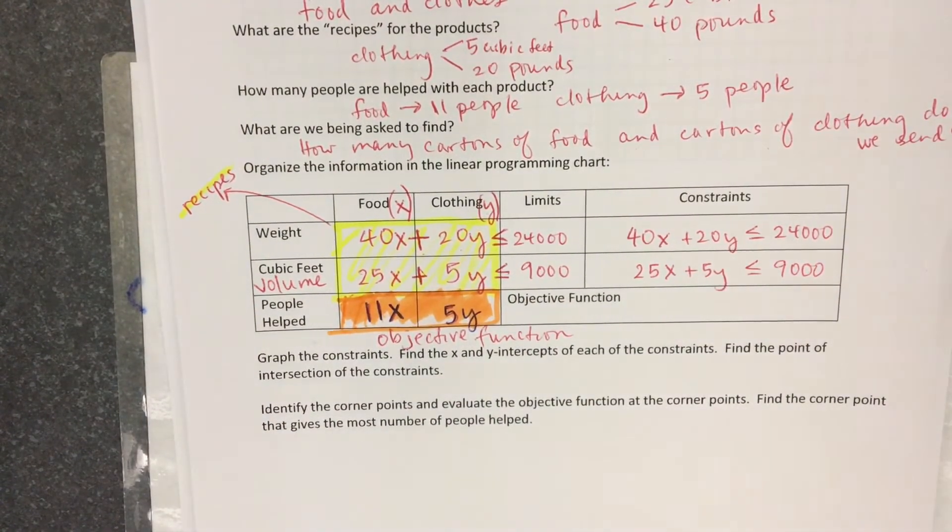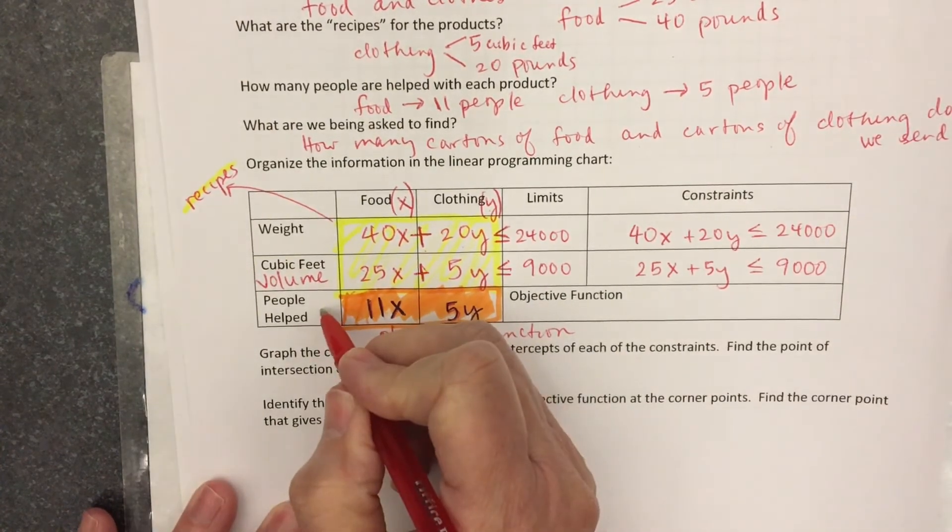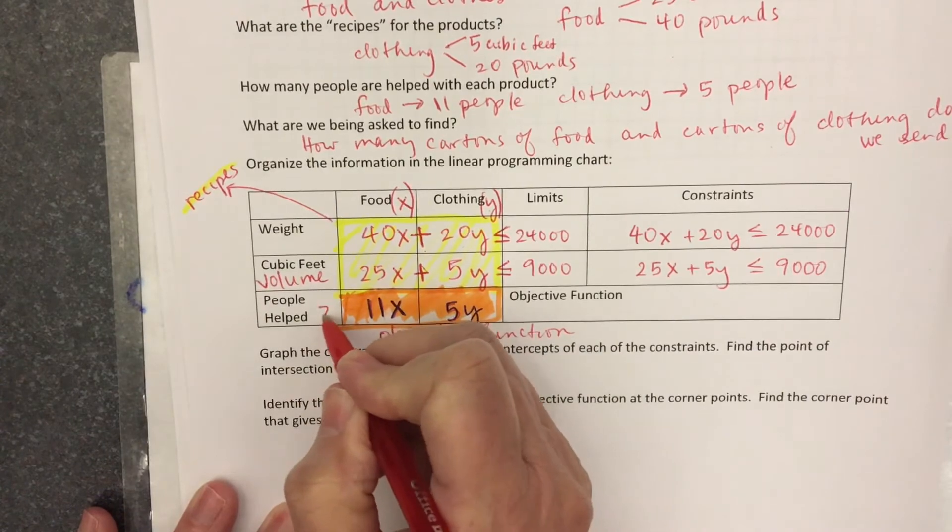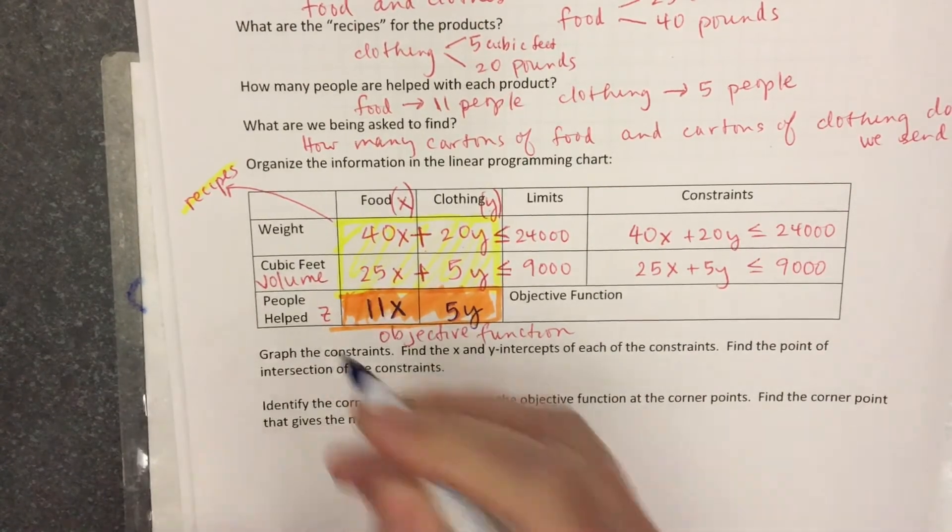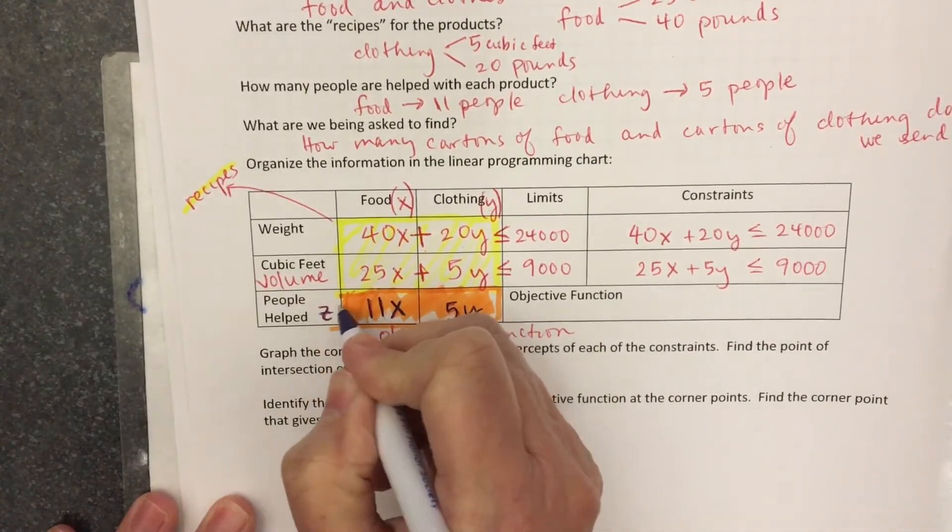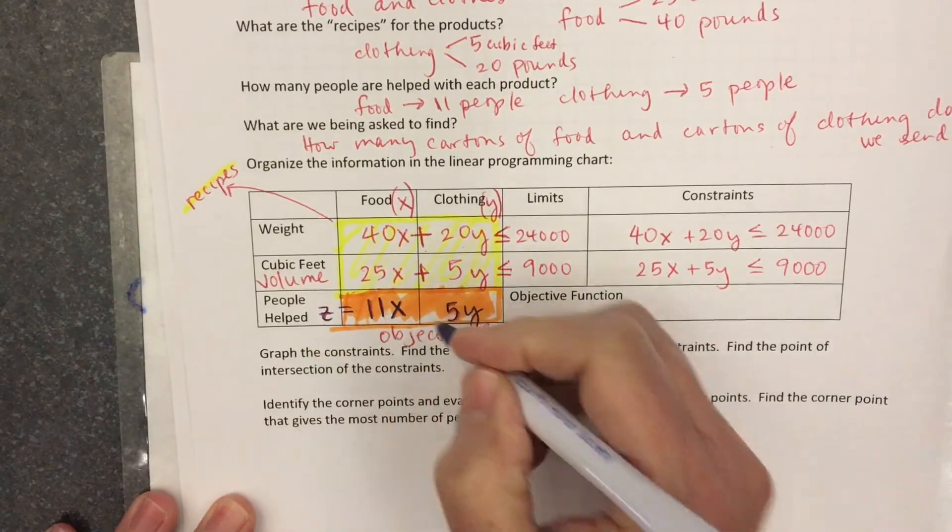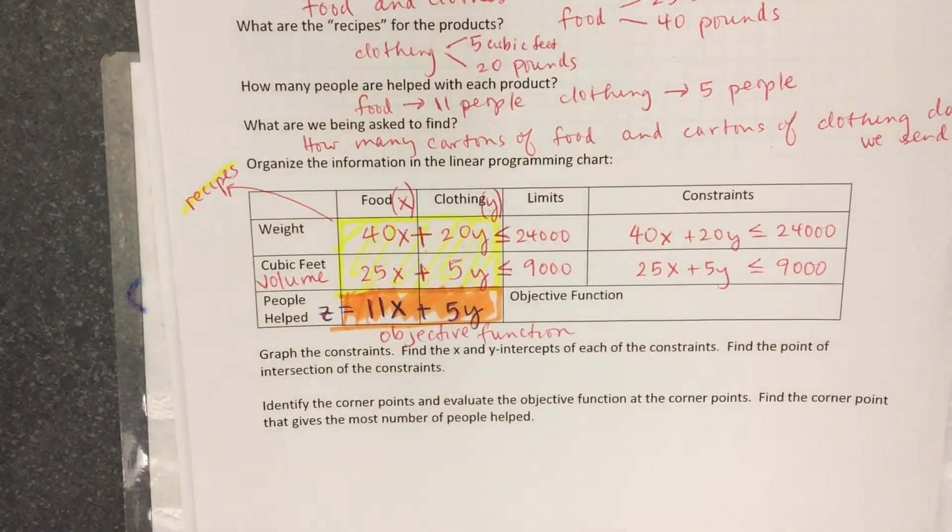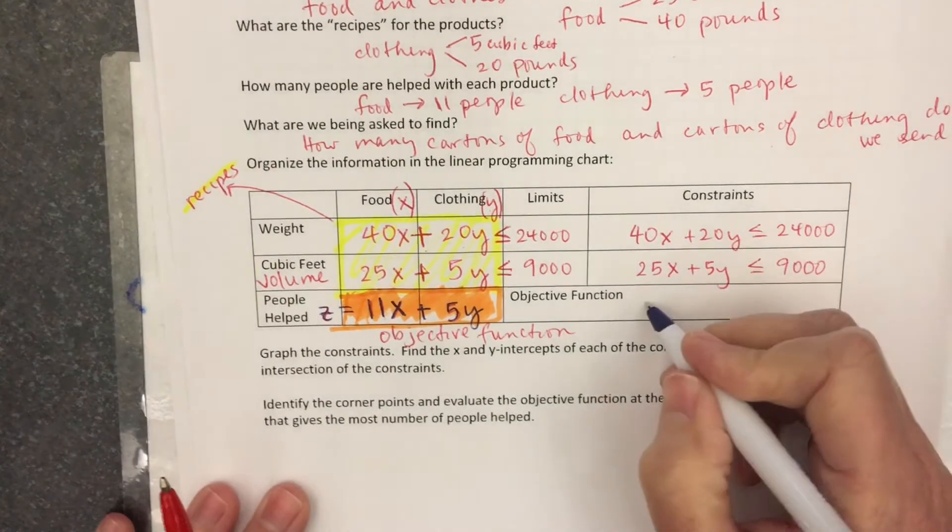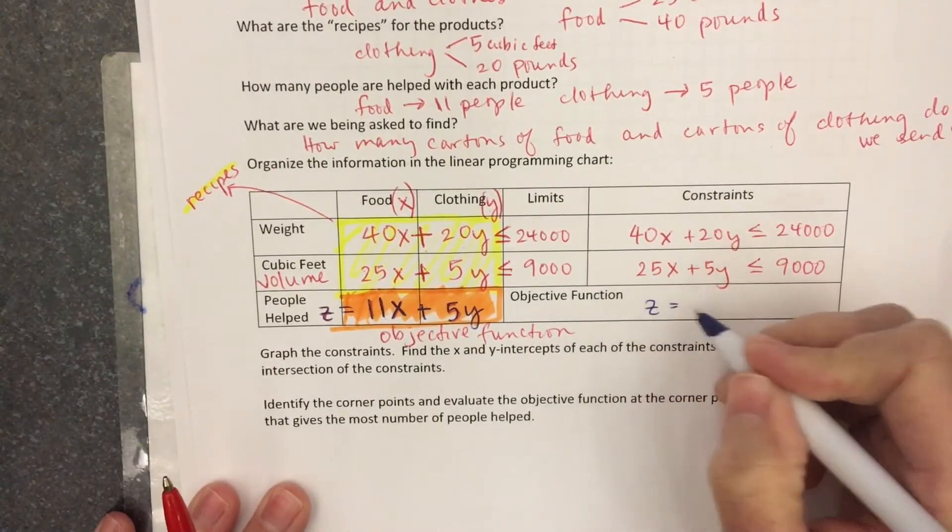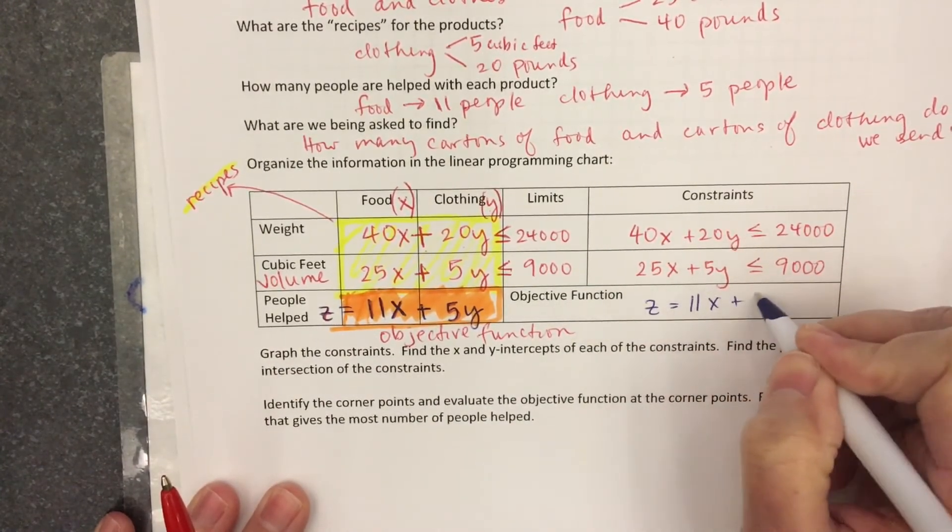The objective function, I'm gonna read it straight across. Our book uses Z for the objective function. In fact, the people helped, we're just gonna call that Z. Z equals 11X plus 5Y. I'm gonna write that in the space for objective function.